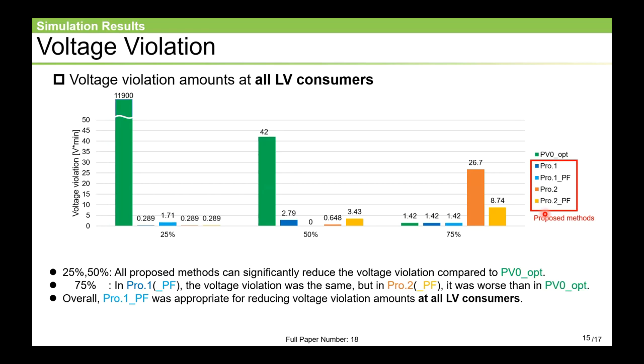However, the trend changes appeared when we look at the results of voltage violation at all LV consumers. First, at 25% and 50%, the voltage violation was significantly reduced for all the proposed methods. On the other hand, at 75%, PRO1 and PRO1_PF showed the same effectiveness as PV0opt, while PRO2 and PRO2_PF increased it. Overall, it can be said that PRO1_PF was appropriate for reducing the voltage violation amounts at all LV consumers.